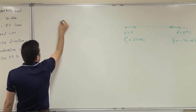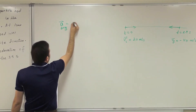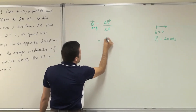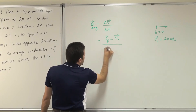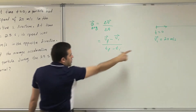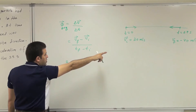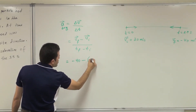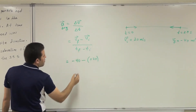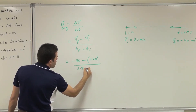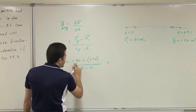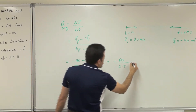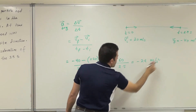By definition, average acceleration equals delta v divided by change in time, so it is v-final minus v-initial divided by t-final minus t-initial. V-final is minus 40 — I need to substitute with a negative sign because it indicates a reversal in direction. So it is minus 40 minus 20, which is minus 60, divided by 2.5 seconds, which gives minus 24 meters per second squared — the unit of acceleration.